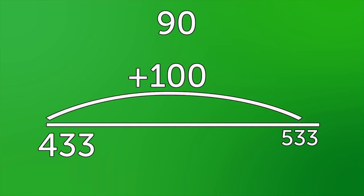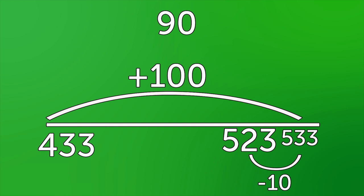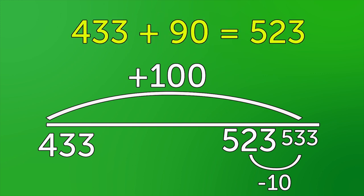Four hundred and thirty-three plus a hundred is five hundred and thirty-three. A hundred is ten more than ninety — that's ten more than we needed to add — so take that away from the new total. Five hundred and thirty-three minus ten is five hundred and twenty-three. Four hundred and thirty-three plus ninety equals five hundred and twenty-three.